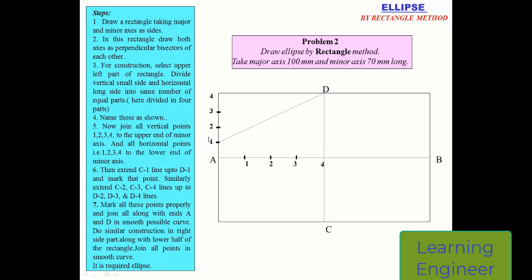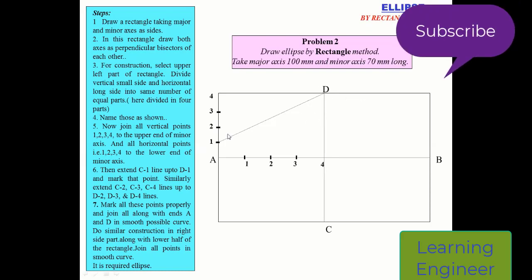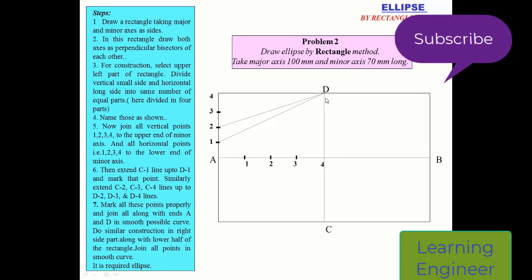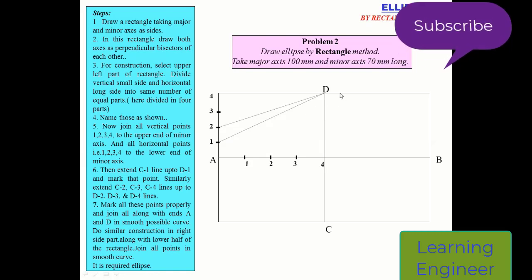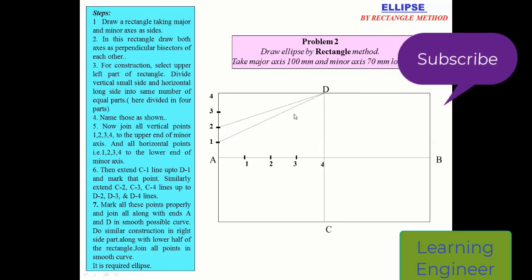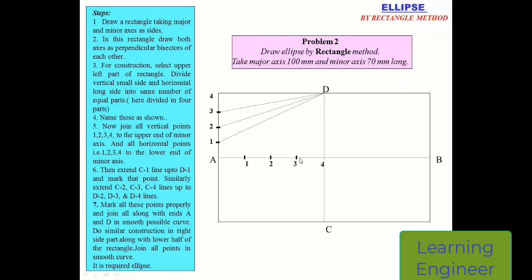Now we will join all these points with point D. Point number one has been joined with point D, point number two with point D, and point number three has been joined with point D.